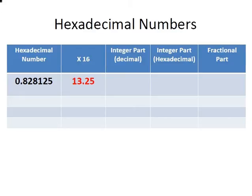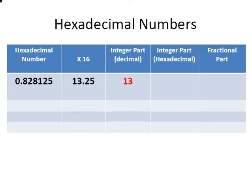Now we're going to break that up into an integer part which is 13, and we're going to find the hexadecimal equivalent of that and that is D. Next we're going to look at the fractional part of 13.25 and that is 0.25. That's the fractional part there.